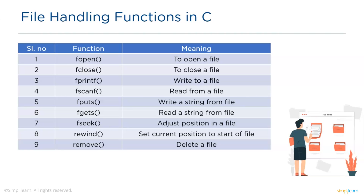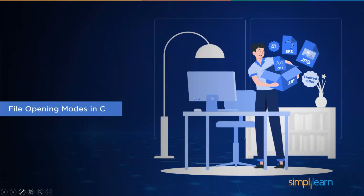Next we have fputs and fgets functions, used to write and read strings from files respectively. The fseek function is used whenever we want to write or read at a specific part of the file — we set the pointer to that particular position using fseek. The rewind function sets the current position to the start of the file, meaning the pointer is set to the beginning. Finally, the remove function is used to delete a file. Now let's move on to the file opening modes of C language.